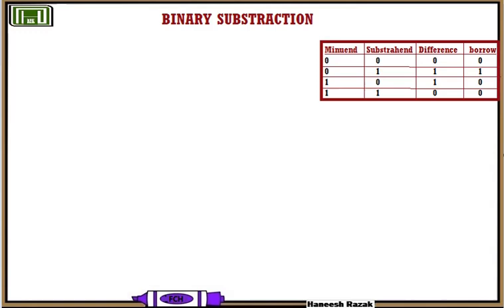In decimal, 10 is borrowed. In binary, 2 is borrowed. In hexadecimal, 16 is borrowed. The second step is to simply subtract the lower value from the upper value. The rules for binary subtraction are as follows.